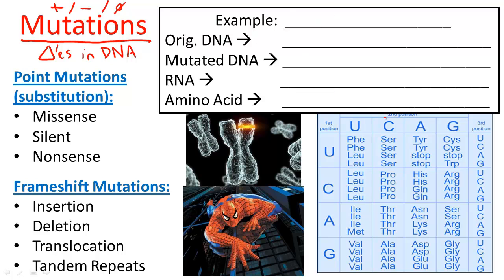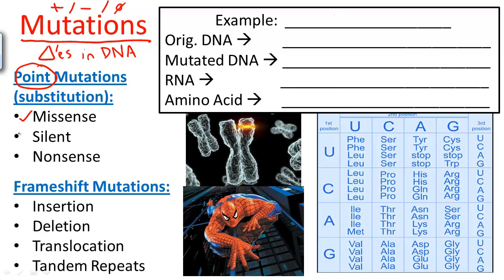But once in a while these mutations come through and confer a pretty severe effect. Let's focus on the major types of mutations. One major type is called a point mutation, and there are three different kinds: missense, silent, and nonsense. Another type of mutation is called a frameshift mutation. There are several kinds: insertion, deletion, translocation, and tandem repeats.